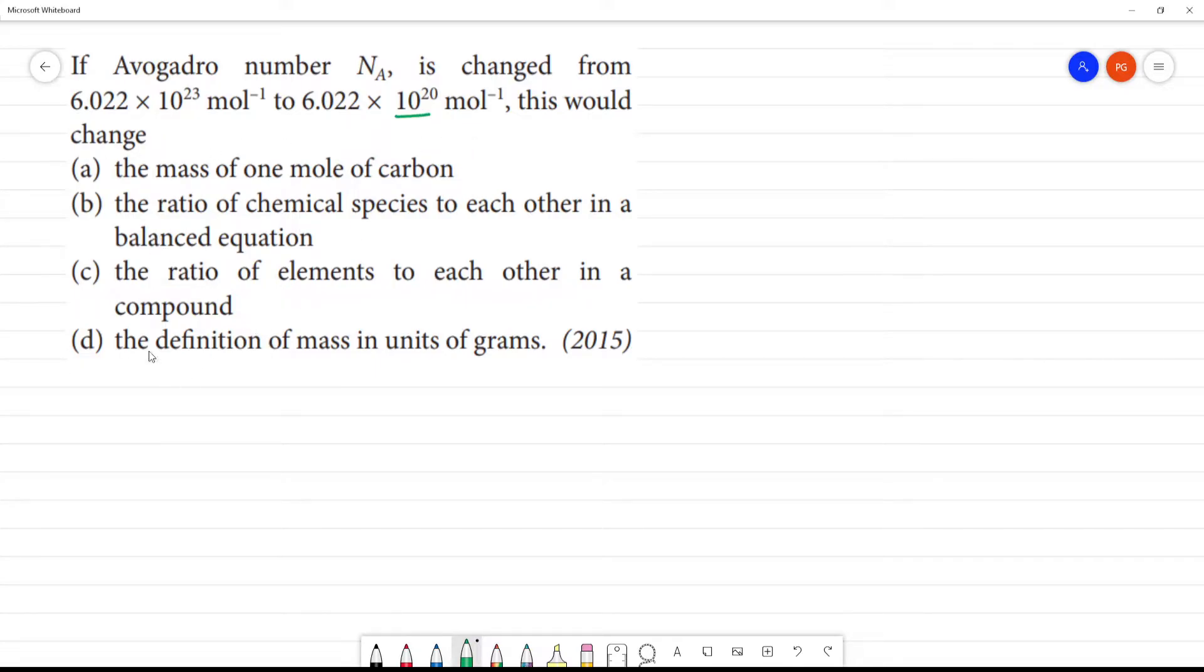We will see what change. For carbon, 1 mole is equal to 6.022×10^23 mol^-1, that is 1 mole, that is equal to 12 grams. It is the standard value.